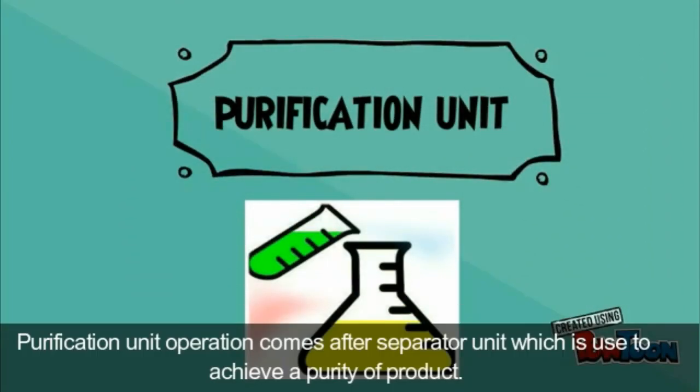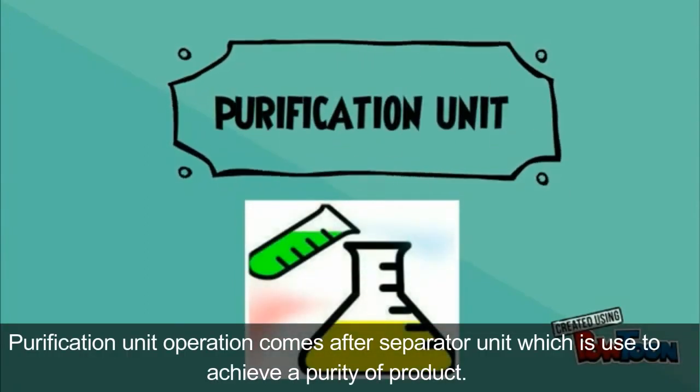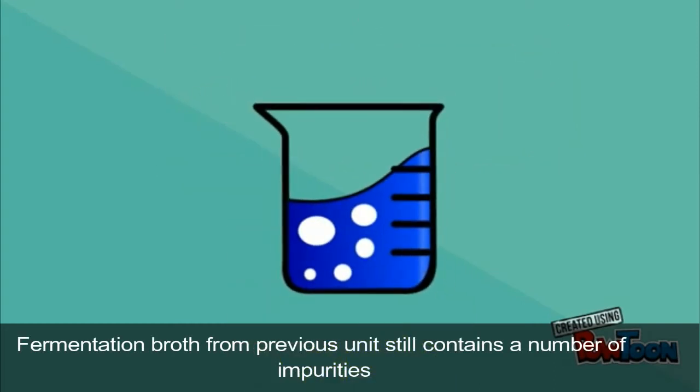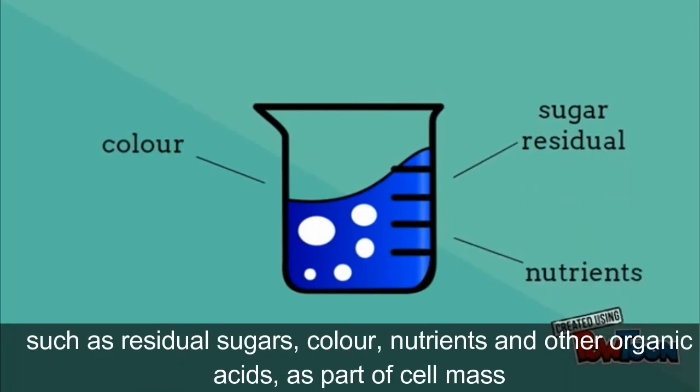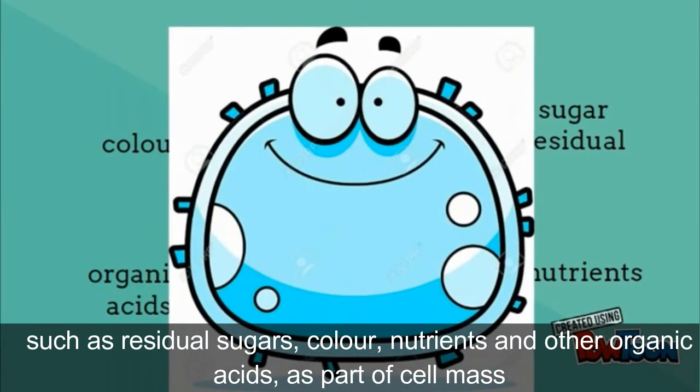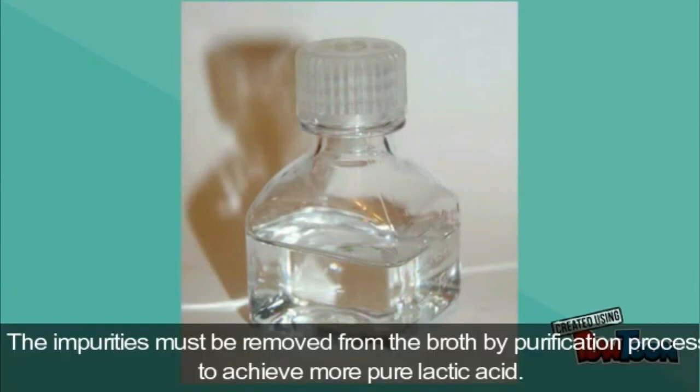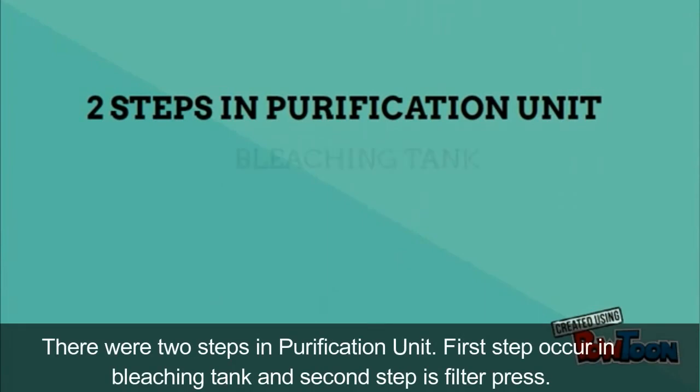Purification unit: purification comes after separation unit which is used to achieve the purity of product. Fermentation broth from previous unit still contains a number of impurities such as residual sugar, color, nutrients, and other organic acids as part of cell mass. The impurities must be removed from the broth by purification process to achieve more pure lactic acid. There were two steps in purification unit. First step occurs in bleaching tank and second step is filter press.